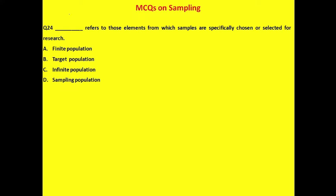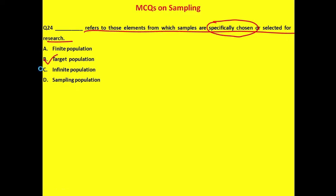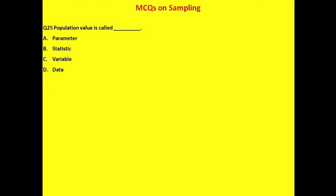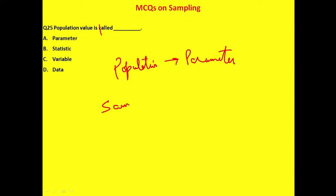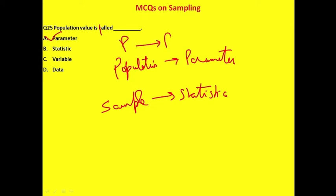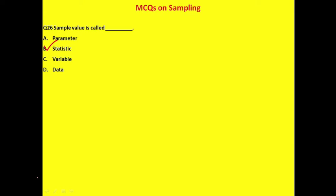Question 24 refers to elements from which samples are specifically chosen or selected for research — this is the target population or sampling population. The population value is called a parameter, and the sample value is called a statistic. Remember: P for population = parameter, S for sample = statistic. The correct answer for parameter is option A.